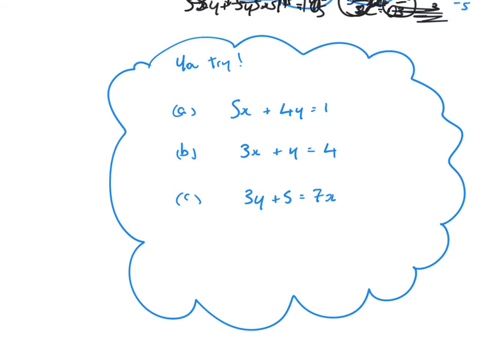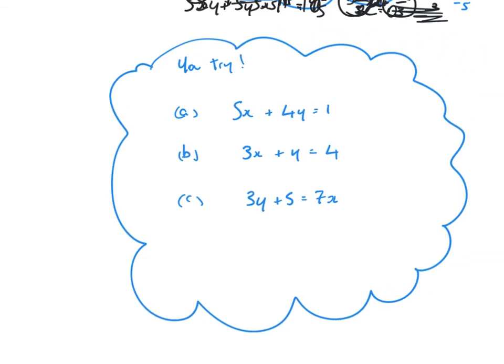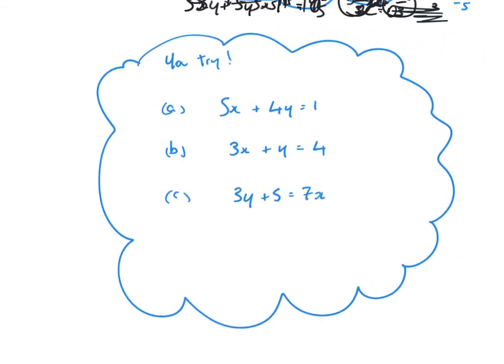Now try these three examples: 5x plus 4y equals 1; 3x plus y equals 4; and 3y plus 5 equals 7x. Rearrange each to the form y equals mx plus c and identify both the gradient and the y-intercept.